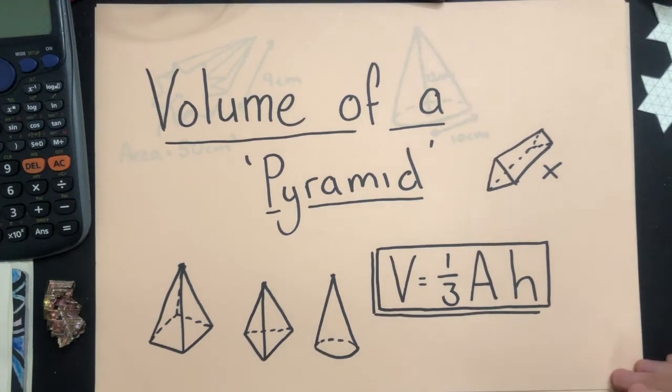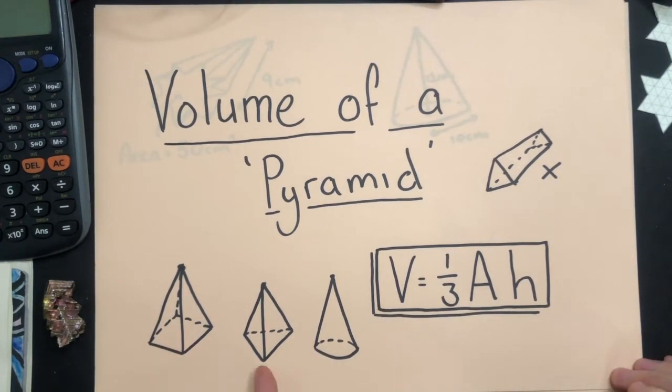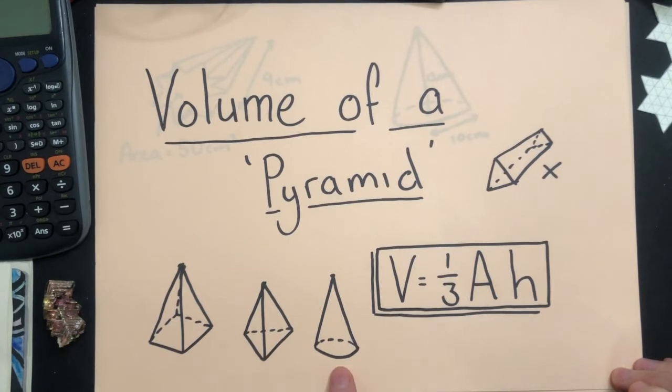Volume of a pyramid. First of all, what is a pyramid? Here's a square-based pyramid, a triangle-based pyramid, a cone is just a circle pyramid.